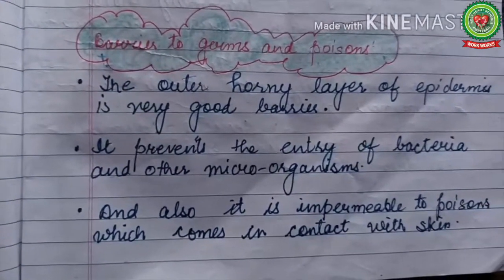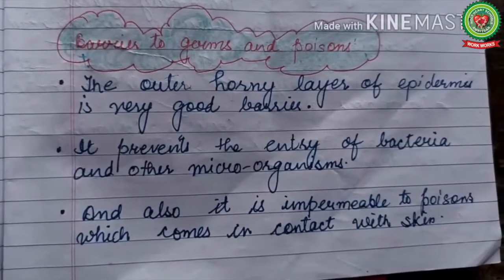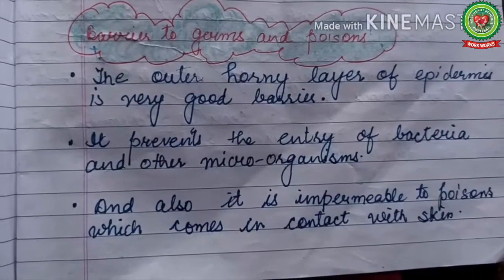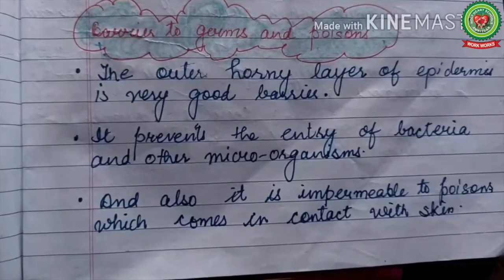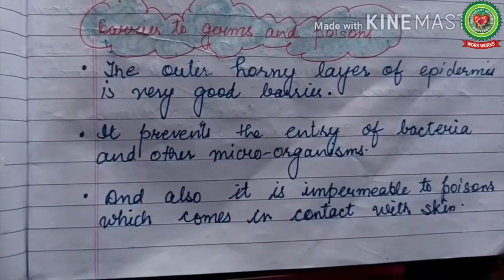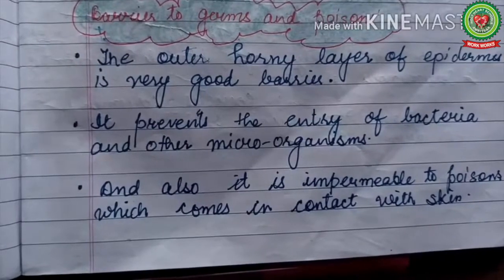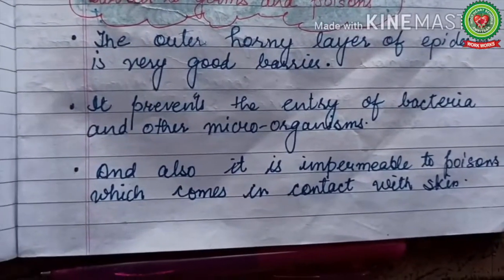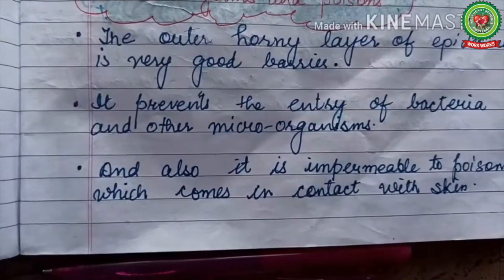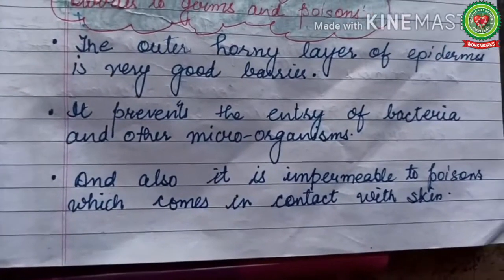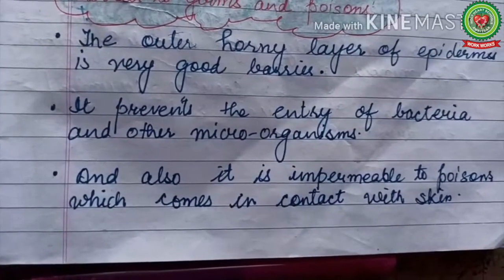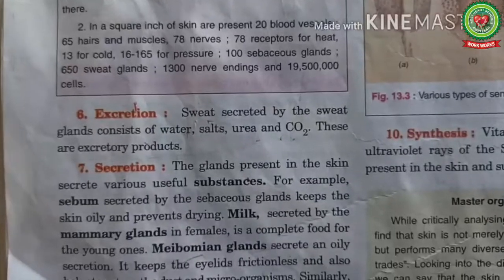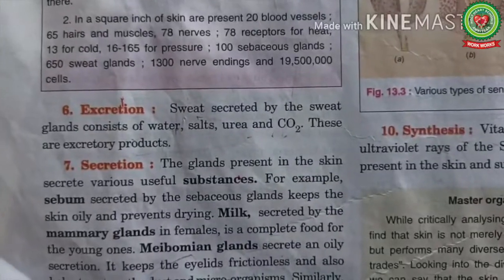Next function is barrier to germs and poison. The outer horny layer of the epidermis is a very good barrier that prevents the entry of bacteria and other microorganisms. It is also impermeable to poison that comes in contact with the skin.